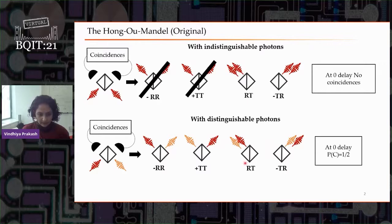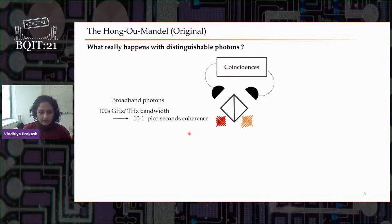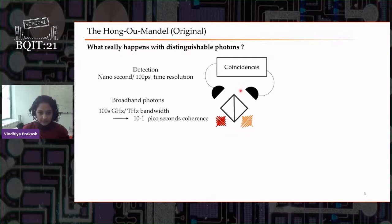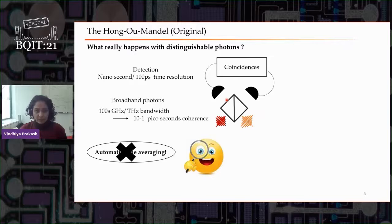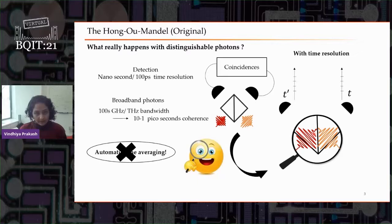What exactly is happening in the case of distinguishable photons? Typically, these experiments have been performed in the past with photons that are very broadband — hundreds of gigahertz or terahertz in bandwidth. This means they have a coherence time on the order of a picosecond to tens of picoseconds. The detectors used to measure these photons have about a nanosecond or hundreds of picoseconds in time resolution. So the act of detecting a photon automatically averages over the entire wave packet. As with most things in nature, if we are in a hurry, we miss the details. What if instead of time averaging, we zoomed in and had the time resolution to look inside what happens within the coherence time of these photons? We can see that there are some combinations of detector times for which there is a Hong-Ou-Mandel type of complete destructive interference.